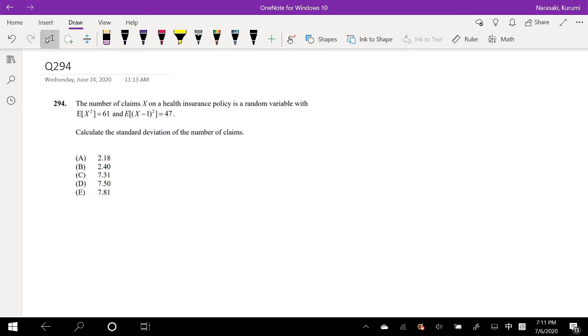Okay, assuming that you already attempted it, let's just dive right in. The number of claims x in a health insurance policy is a random variable with E(x²) equals the second moment being 61 and that thingy being 47. Calculate the standard deviation of the number of claims.